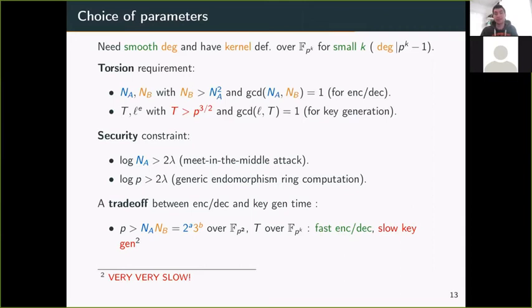The other possibility, which is what we chose for our implementation, is to start with finding a good prime p with good torsion points, T-torsion points, and then choose Na and Nb among this available torsion. With that strategy, all the torsion points are defined over Fp², which gives us reasonable key generation. Of course, since the factors in Na and Nb are going to be a lot bigger than 2 and 3, the encryption and decryption mechanisms are going to be a lot slower.